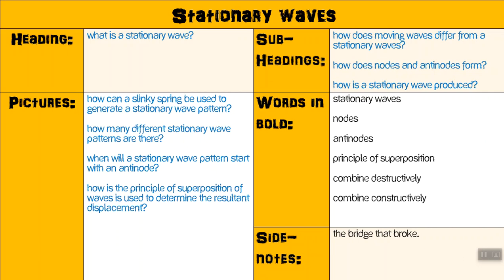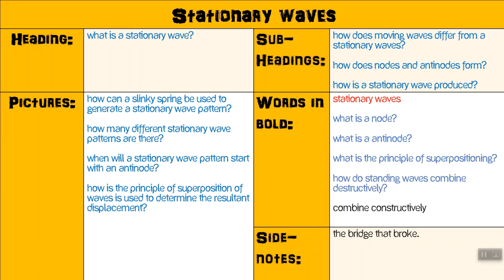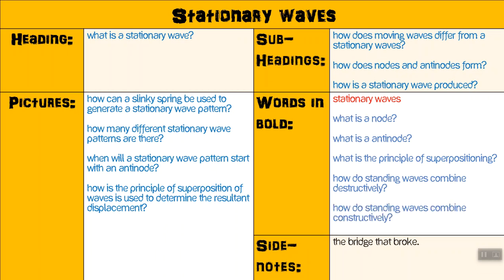If we look at the words in bold — we don't have to repeat 'what is a stationary wave' — we can ask: what is a node? What is an antinode? What is the principle of superpositioning? How does a standing wave combine destructively? And how does a standing wave combine constructively? And from the side notes — the bridge that broke: why did the Tacoma Narrows bridge break?